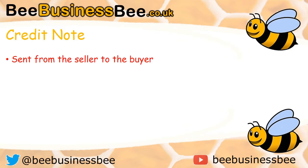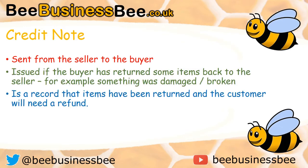A credit note is sent from the seller to the buyer and effectively offers some discount or money back for an issue that may have arisen. Typically, a credit note is issued if the buyer returns an item — perhaps because it was damaged or broken — or if the seller couldn't deliver something that was paid for. The credit note is essentially money coming back to the buyer, and it's only issued if the seller can't fulfil the exact details of the order or something has gone wrong.